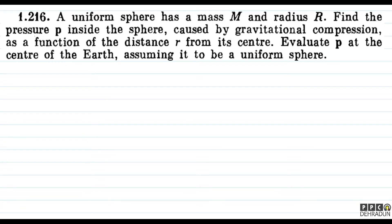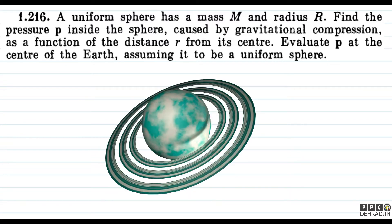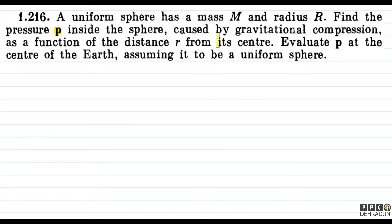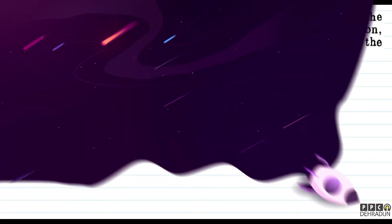The question says: a uniform sphere has a mass capital M and radius capital R. Find the pressure P inside the sphere caused by gravitational compression as a function of the distance small r from its center. Evaluate P at the center of the earth, assuming it to be a uniform sphere.